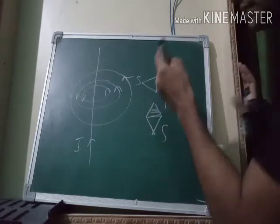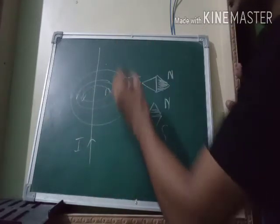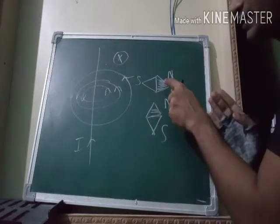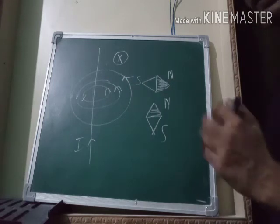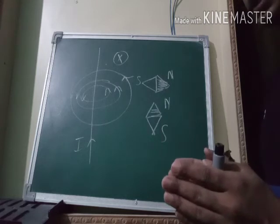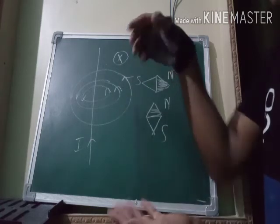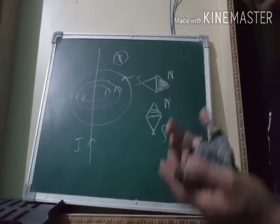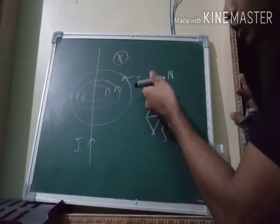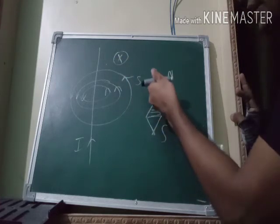Why does the compass needle align? It is the natural property of a magnet to align its north pole in the direction of magnetic lines of force. There is no deeper explanation — it is simply an observation, like how a released object falls downward due to gravity. In the same way, if a compass needle is placed near a current-carrying wire, the north pole will align itself in the direction of the magnetic lines of force.